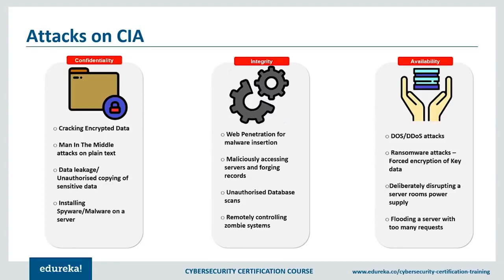Next on the list is integrity, which involves maintaining the consistency, accuracy, and trustworthiness of data over its entire life cycle. Data must not be changed in transit, and steps must be taken to ensure it cannot be altered by unauthorized people. Measures include file permissions and user access controls. Version control may be used to prevent erroneous changes. Some data might include checksums — even cryptographic checksums — for verification of integrity, and backups or redundancies must be available to restore affected data to its correct state.